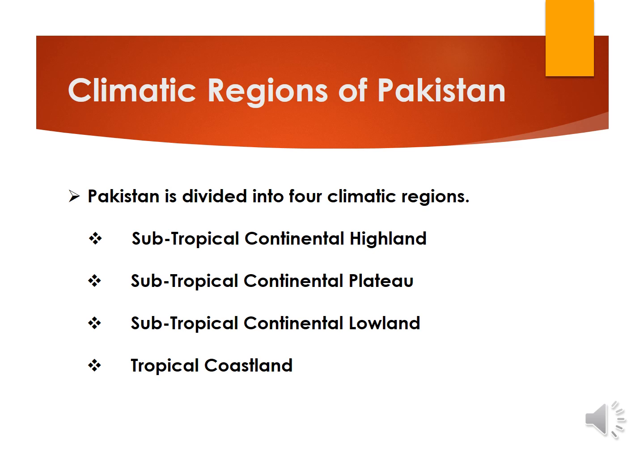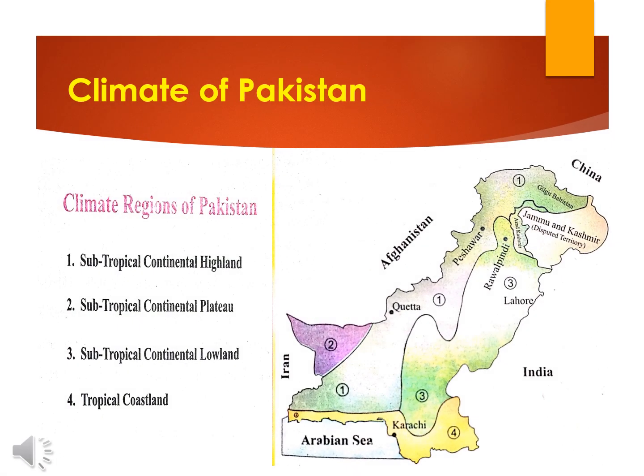According to the climate, Pakistan is divided into four regions. These regions are: Subtropical Continental Highland, Subtropical Continental Plateau, Subtropical Continental Lowland, and Tropical Coastland. This slide shows the division of Pakistan according to its climatic regions and the areas of Pakistan that are included in these climatic regions.